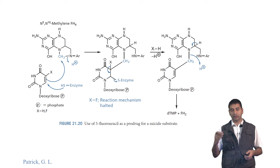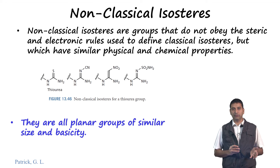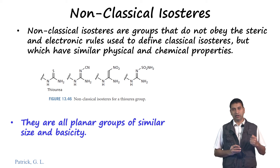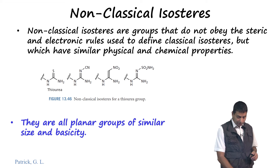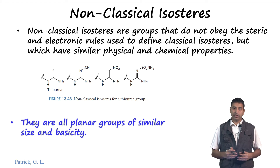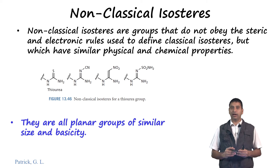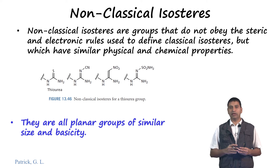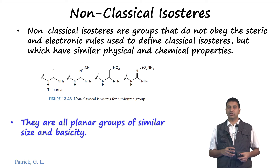Here the isostere also plays a role in disrupting the mechanism. Other than classical isosteers, there are also molecules known as non-classical isosteers. These are groups that do not obey the steric and electronic rules used to define classical isosteers, but which have very similar physical and chemical properties. For example, if you have a thiourea in your drug, you could replace it with any of several groups because they are all planar, all have an sp2 carbon, all have similar basicity, and similar size. These molecules do not have the same valency and are therefore called non-classical isosteers.